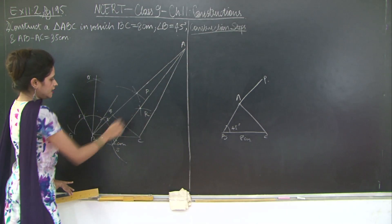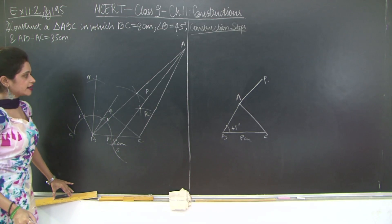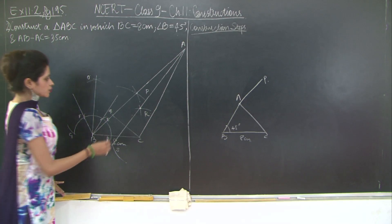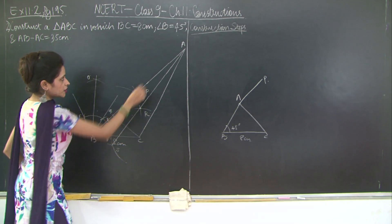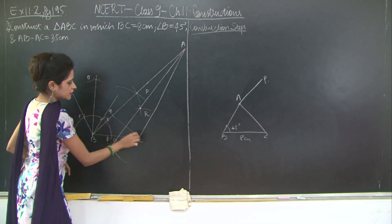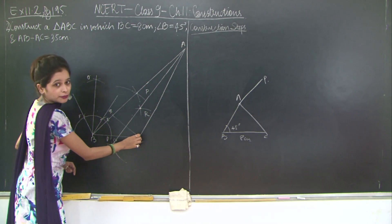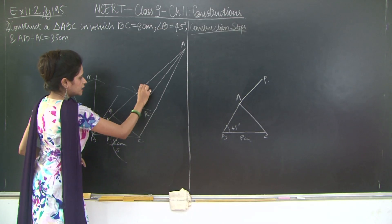So ABC is your required triangle. Why ABC is the required triangle? Because A lies on the line segment, on the bisector, on the perpendicular bisector of QC, so AQ is going to be equal to AC.